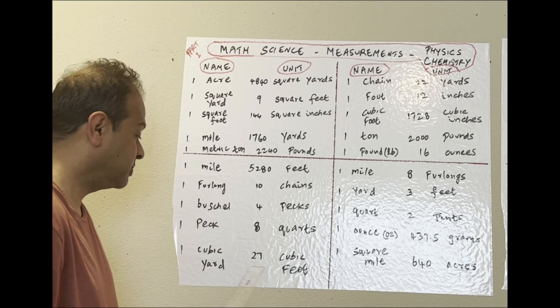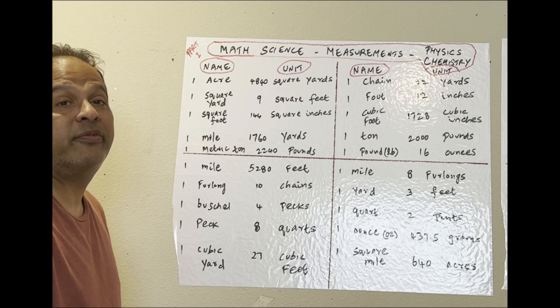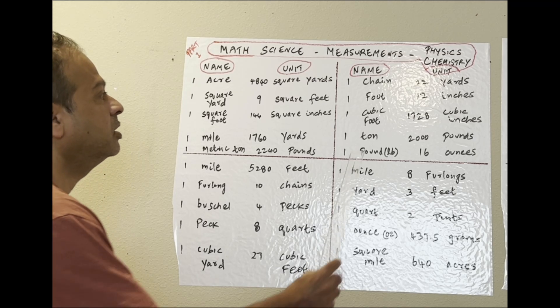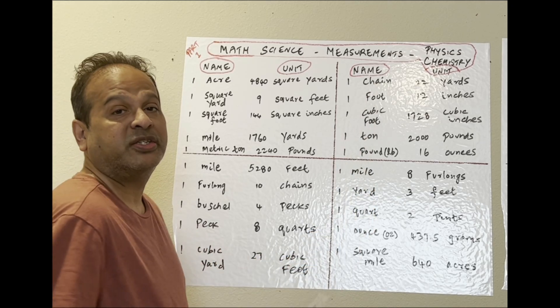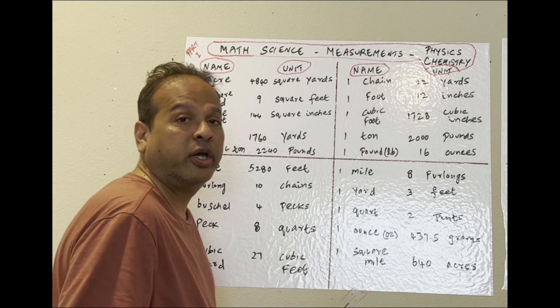One cubic yard: 27 cubic feet. Here, what is the chain? One chain is 22 yards.